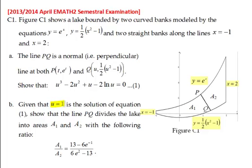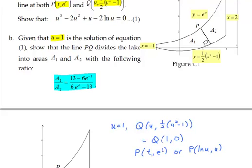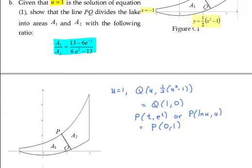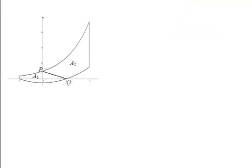Part B tells us that u equals 1, so we are able to find the exact coordinate values of P and Q. When u equals 1, Q becomes the point (1, 0) by substituting the u value, and P becomes (0, 1). Note that the given diagram does not show P and Q in correct positions — this is a better illustration of the correct positions of P and Q.